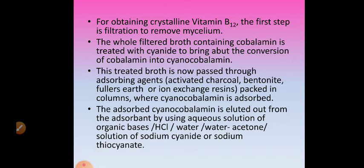For obtaining crystalline vitamin B12, the first step is filtration to remove the mycelium. The whole broth is subjected to filtration so that mycelium is separated out. The whole filtered broth containing cobalamin is then treated with cyanide to bring about the conversion of cobalamin into cyanocobalamin. So the filtered broth is treated with cyanide so that we now get cyanocobalamin.